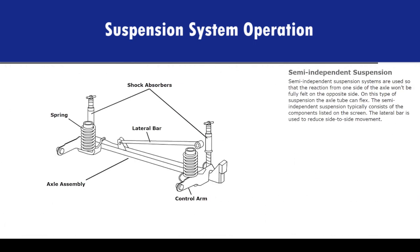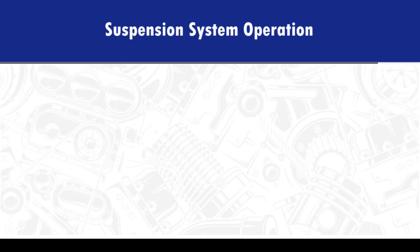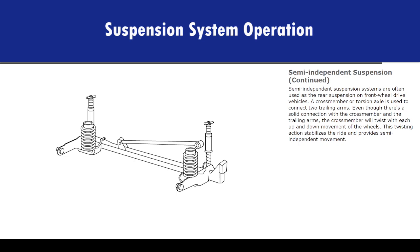Semi-independent suspension systems are used so that the reaction from one side of the axle won't be fully felt on the opposite side. On this type of suspension, the axle tube can flex. The lateral bar is used to reduce side-to-side movement. Semi-independent suspension systems are often used as the rear suspension on front-wheel drive vehicles. A cross-member or torsion axle is used to connect two trailing arms. Even though there is a solid connection with the cross-member and the trailing arms, the cross-member will twist with each up and down movement of the wheels, providing semi-independent movement.